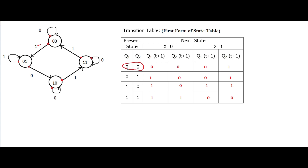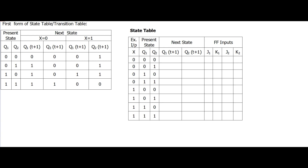The transition table shows how the present state transitions to the next state for different external inputs. Our aim is to find the flip-flop inputs, so we form the original state table. The state table contains external input and present state. It is good practice to have the external input in the MSB part, which is helpful in many cases. The next columns are next state and flip-flop inputs J1K1 and J2K2.